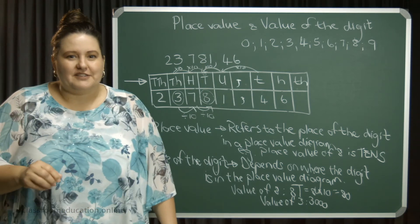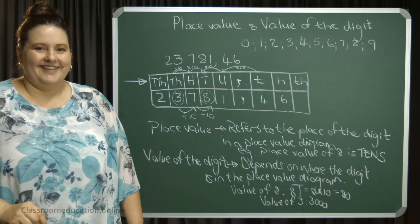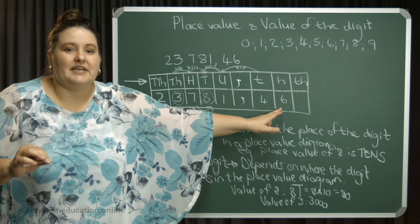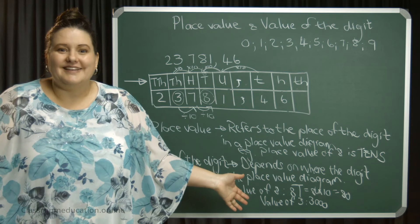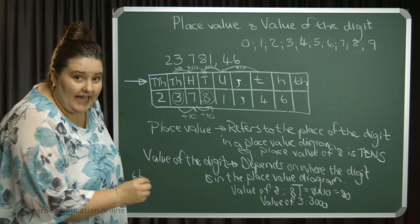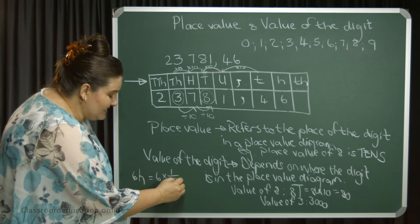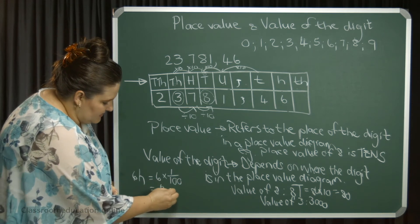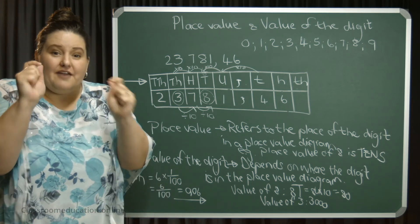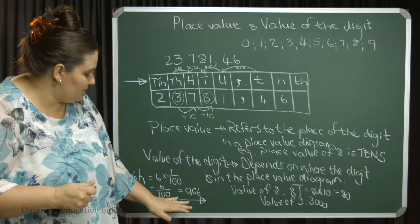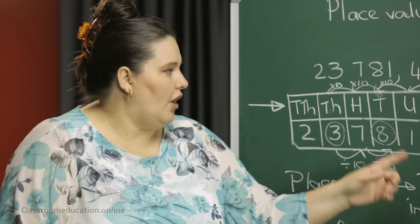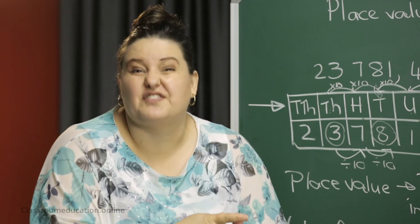Now a tricky one: what is the value of the digit six? It's in the column of the hundredths, so the value will be six hundredths — six times one hundredth. I can write that as six over one hundred, or six hundredths, which is the same as 0.06. So if they ask you the value of the digit, explain it using the digit and its column. If they ask the place value, you only give the column name: hundredths, tens, thousands, and so on.